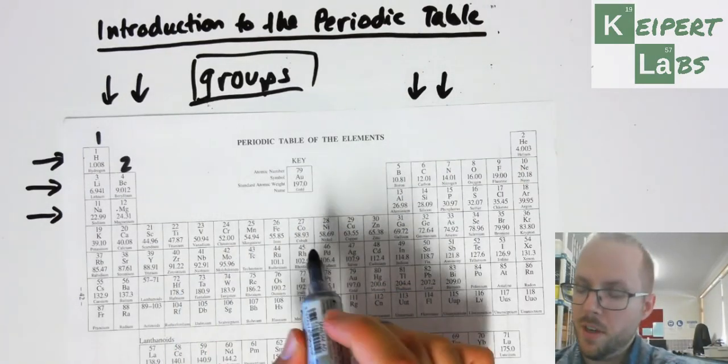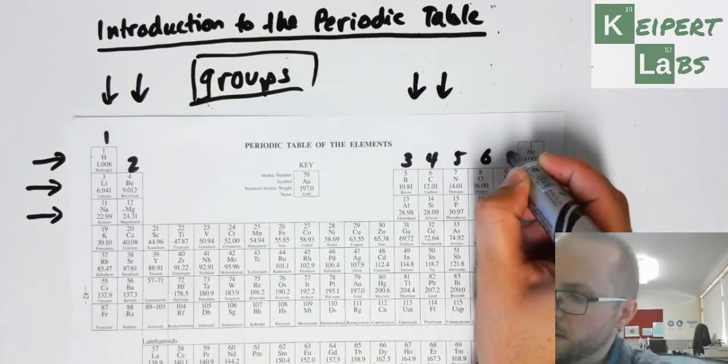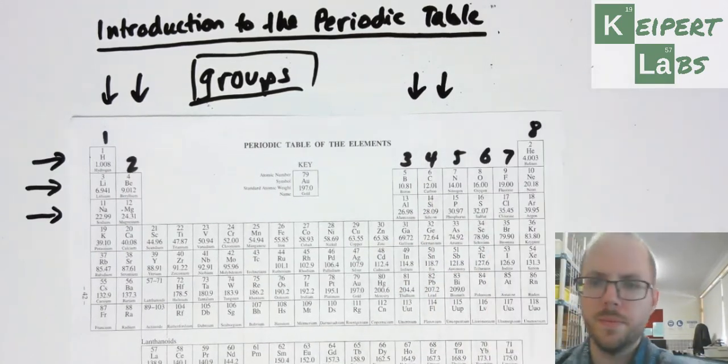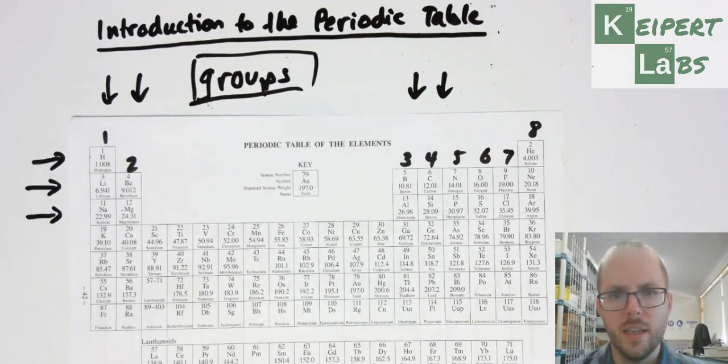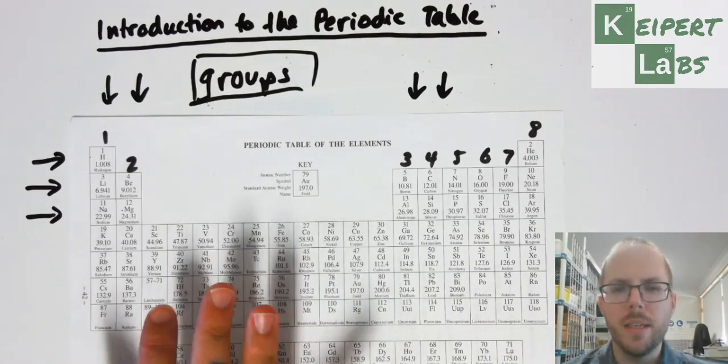So we might say group one, group two. Now notice I'm going to skip this kind of step bit in the middle - group three, four, five, six, seven, and eight.